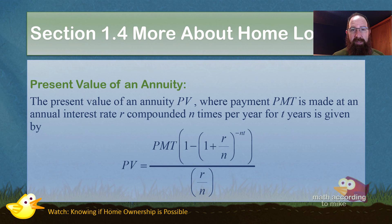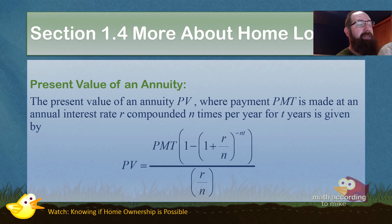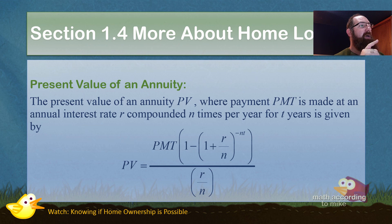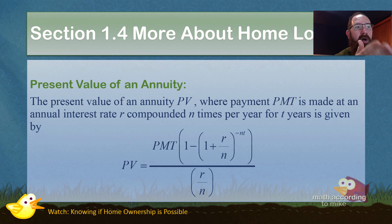For instance, if you hit the lottery and took the lump sum, and then decided to take out $5,000 every year — the lump sum is the present value, and the payment (PMT) in this formula is what you're taking out every year. So the present value of an annuity (PV), where the payment PMT is made at annual interest rate r, compounded N times per year for T years, is given by the formula. This tells you the lump sum necessary to be able to take out PMT dollars every month, year, or week for T years.